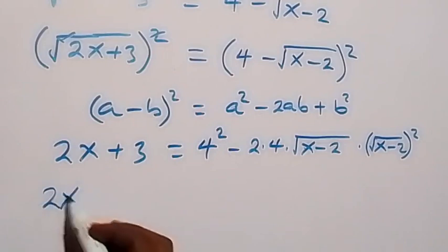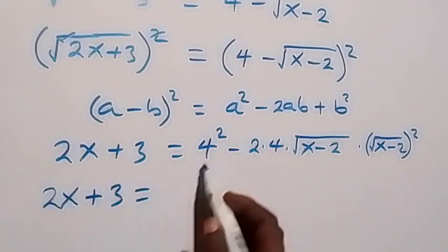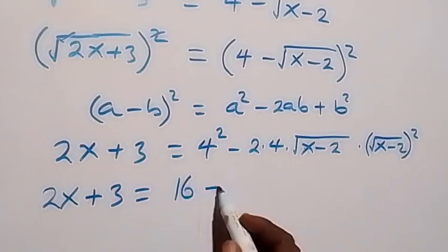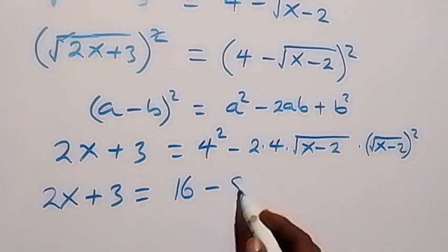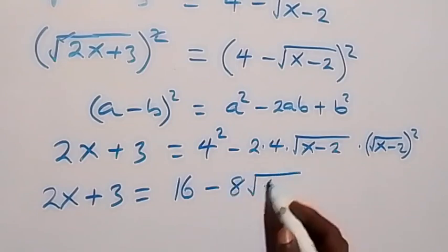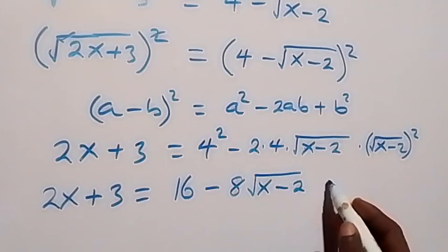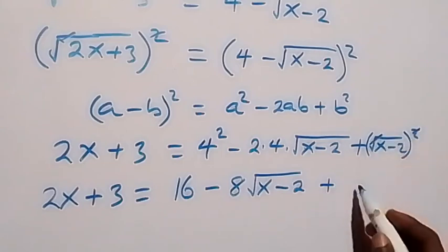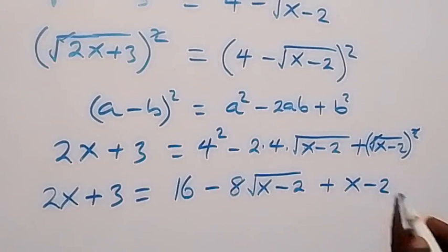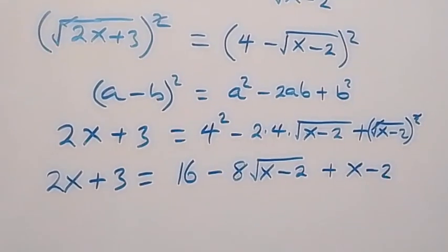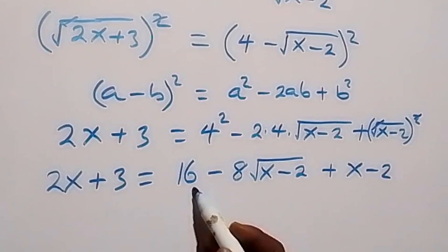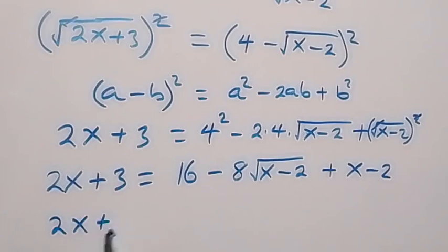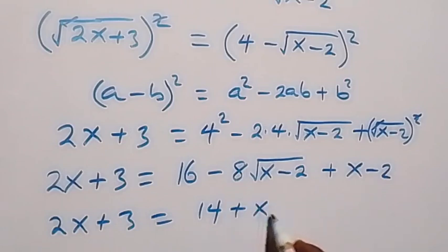This becomes: 2x plus 3 equals 16, minus 8 times square root of x minus 2, plus x minus 2. On the right side, 16 minus 2 gives 14, so this becomes: 2x plus 3 equals 14 plus x minus 8 times root of x minus 2.